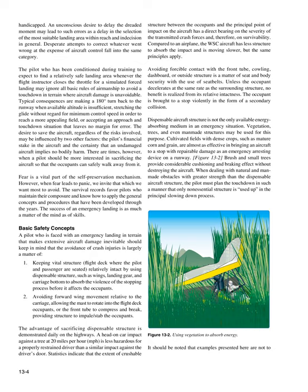Basic safety concepts: A pilot facing an emergency landing in terrain that makes extensive aircraft damage inevitable should keep in mind that avoiding crash injuries is largely a matter of: (1) Keeping vital structure — the flight deck where the pilot and passenger are seated — relatively intact by using dispensable structure such as wings, landing gear, and carriage bottom to absorb the violence of the stopping process. (2) Avoiding forward wing movement relative to the carriage, which allows the mass to rotate into the flight deck occupants, or the front tube to compress and break, providing structure to impale the occupants. The advantage of sacrificing dispensable structure is demonstrated daily on highways. Statistics indicate that the extent of crushable structure between the occupants and the principal point of impact has a direct bearing on the severity of transmitted crash forces and survivability.